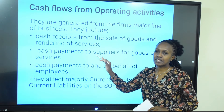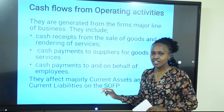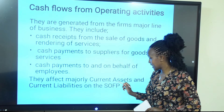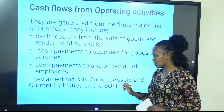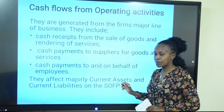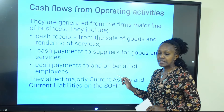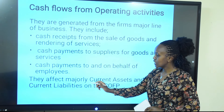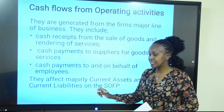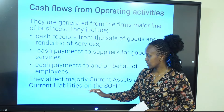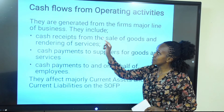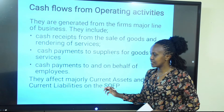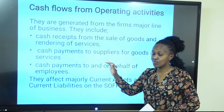When looking at a statement of financial position or balance sheet, the activities reflected as operating activities majorly affect the current assets. These include trade receivables, trade payables, and prepayments. They also affect current liabilities such as accruals and bank overdraft. When we look at the indirect format, we will be majorly focusing on current assets and current liabilities to identify the operating activities.